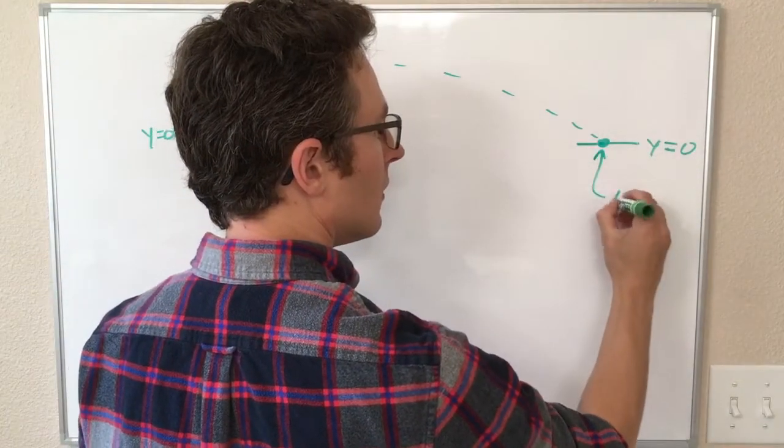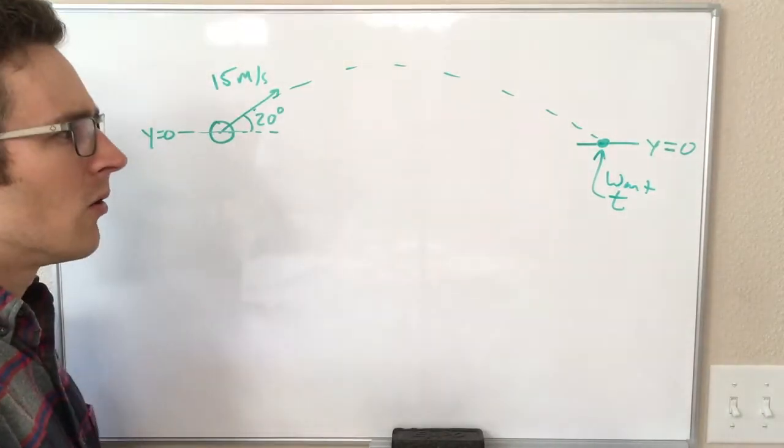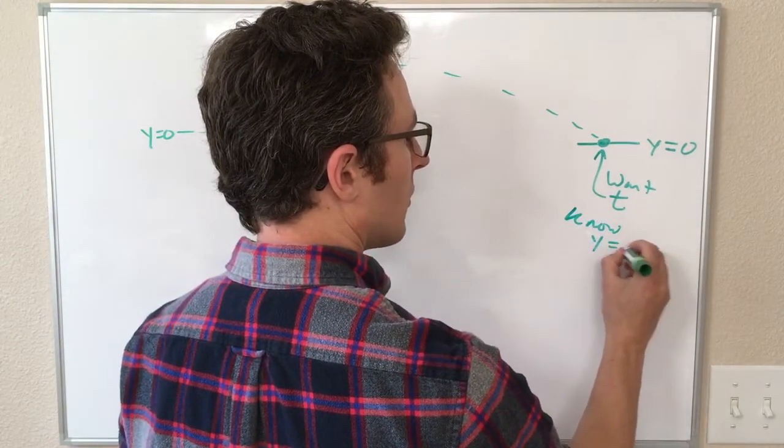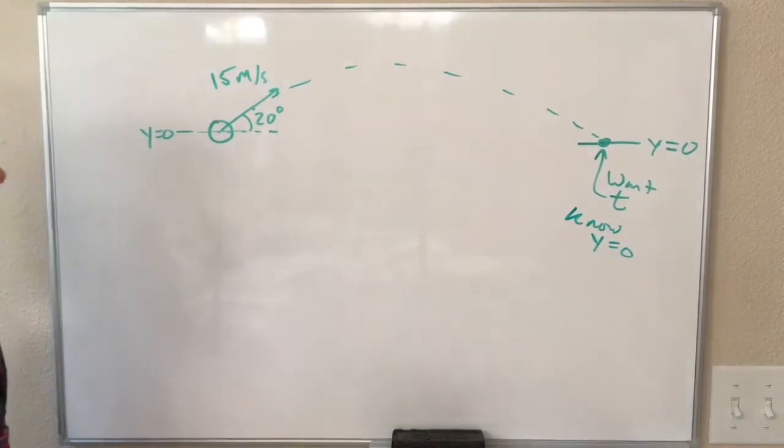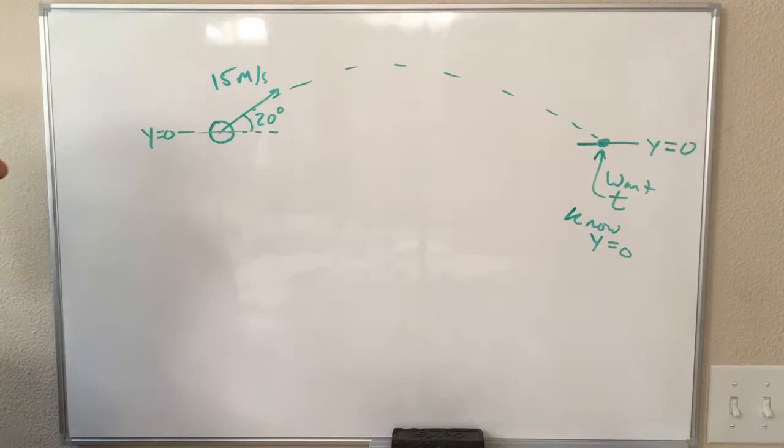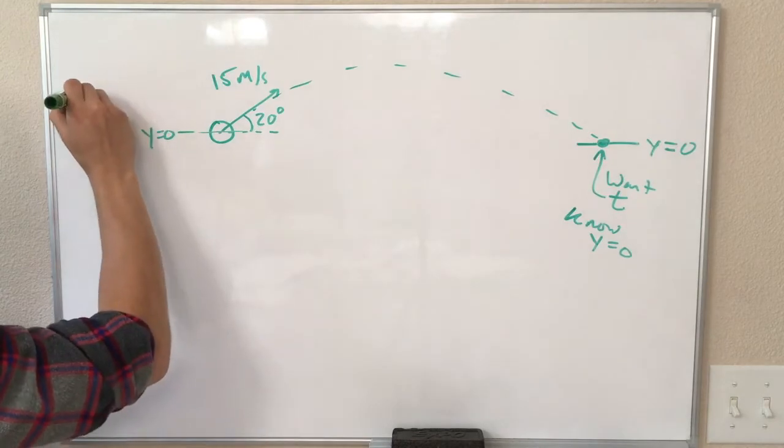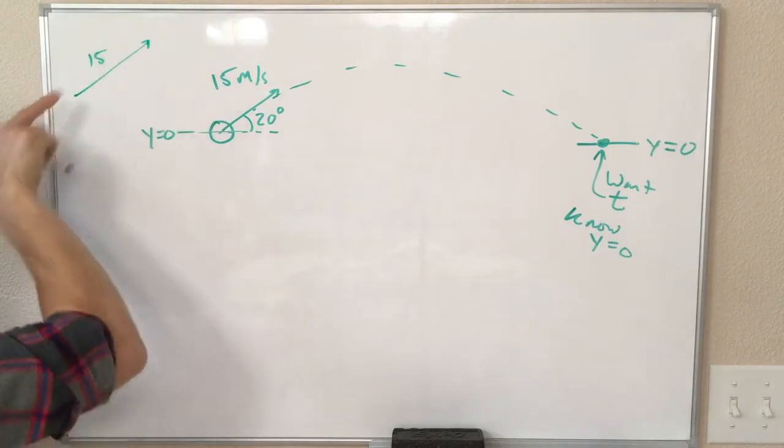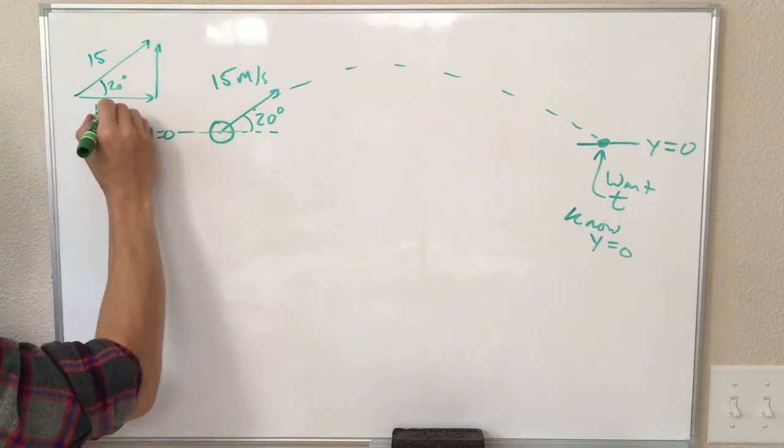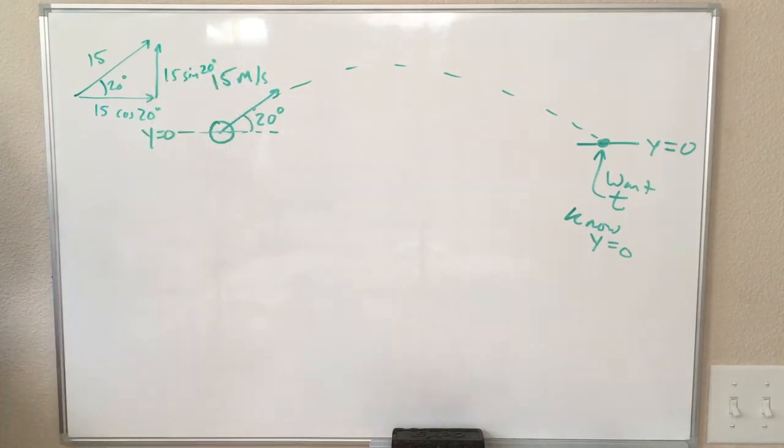So we want to find t at that spot. The only other thing we know at that spot is that y equals zero. So that is a clue that we will have to use the y direction to solve for what is going on there. So anytime we have a velocity at some angle, we can break it into its components. So 15 meters per second at an angle of 20 degrees, that's going to give us 15 cosine 20 in the x direction, and 15 sine 20 in the y direction.